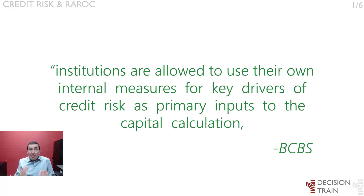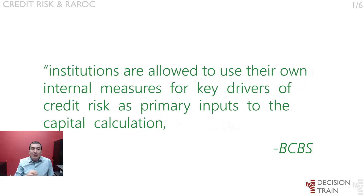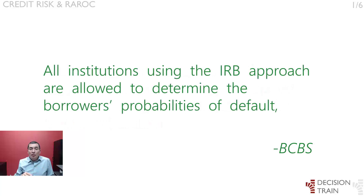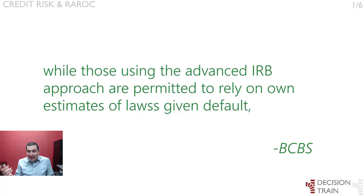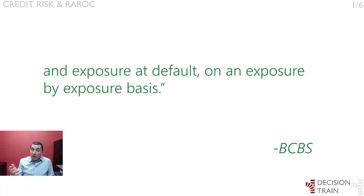By this method, institutions will be allowed to use their own internal measures for key drivers of credit risk as primary inputs to the capital calculation, subject to meeting certain conditions and to explicit supervisory approval. All institutions using the IRB approach are allowed to determine the borrower's probability of default, while those using the advanced IRB approach are permitted to rely on own estimates of loss given default and exposure at default on an exposure-by-exposure basis.